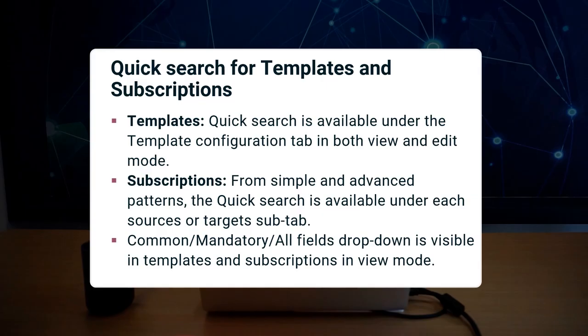Another user interface improvement is that while viewing or editing subscriptions or templates, you can now use a quick search to look through the labels or descriptions of the fields shown. For templates, quick search is available under the template configuration tab, both in view mode and edit mode. For subscriptions from simple and advanced patterns, quick search is available under each sub tab for sources or targets. You can also use a drop-down menu which automatically filters the displayed fields by categorizing them as common, mandatory, or all fields.